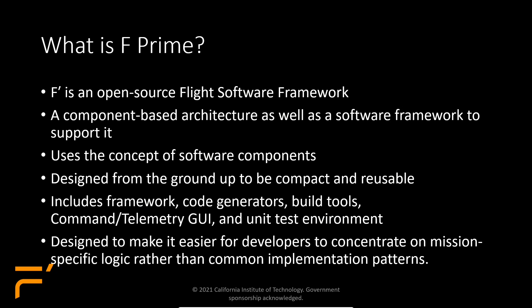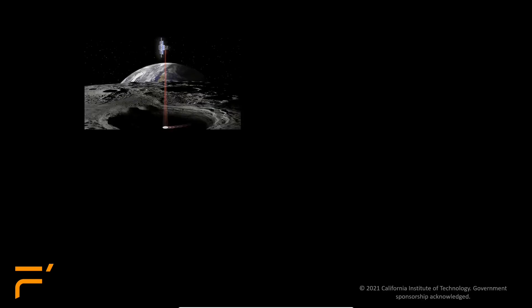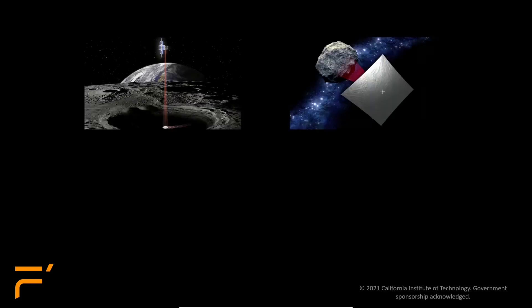F' runs on multiple operating systems like Linux, macOS, Cygwin, VxWorks, and most embedded ARM processors like the Raspberry Pi. This presentation will be focused more on the VxWorks 6.7 configuration for Lunar Flashlight and NeoScout.